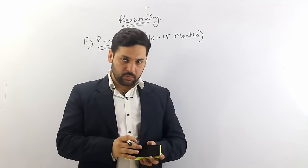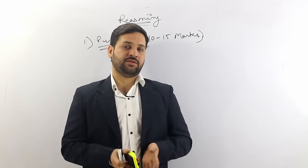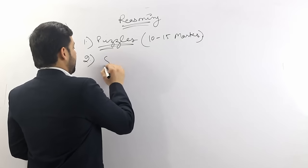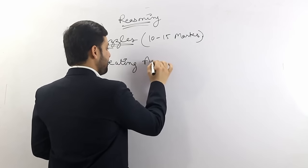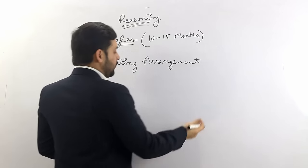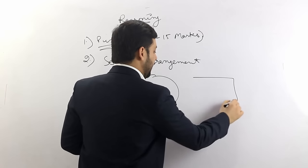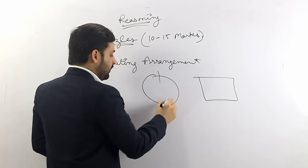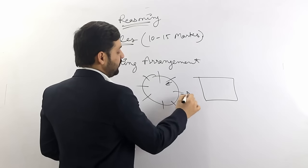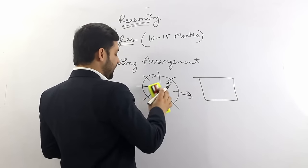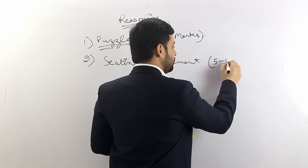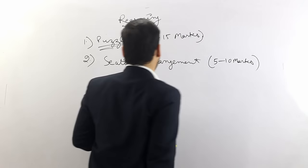I have made an e-book for puzzles — the link is available in the description and the PDF is free. The second part is seating arrangement, where 7 to 8 people sit in a circular or rectangular arrangement; you need to complete the arrangement and answer questions, worth most probably 5 marks. Then there will be inequalities — a very easy topic — and I have already shared a technique for that; the link will be in the description.